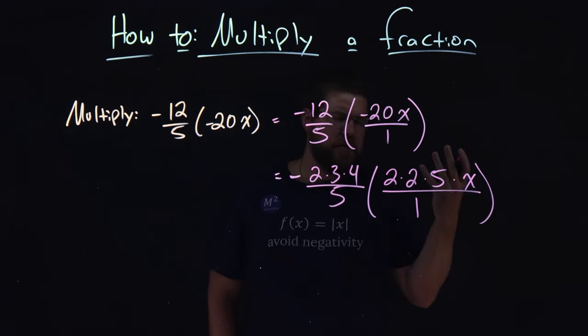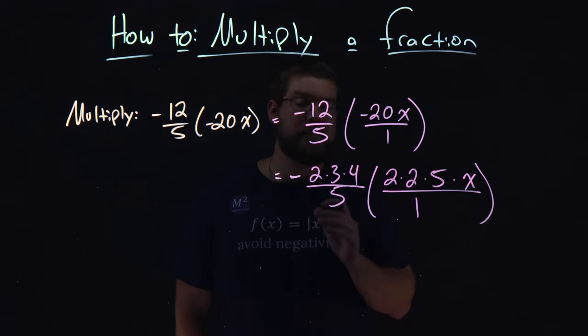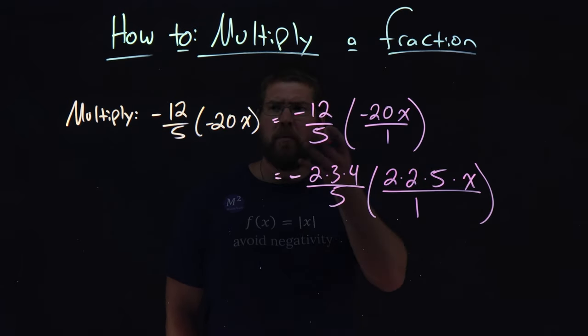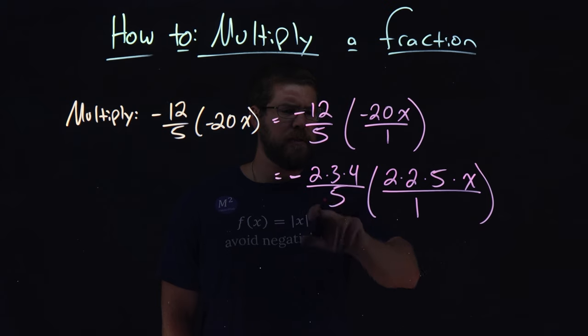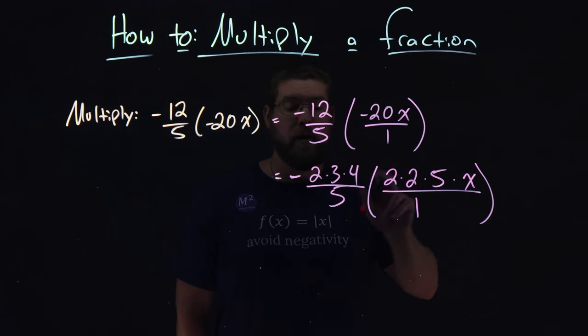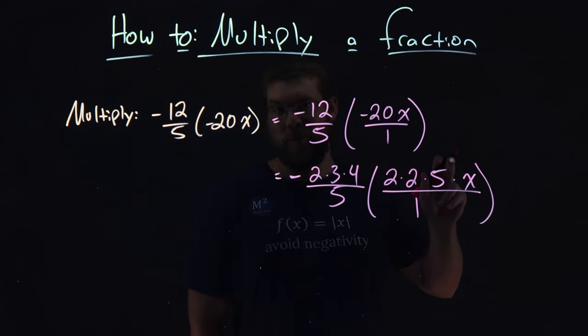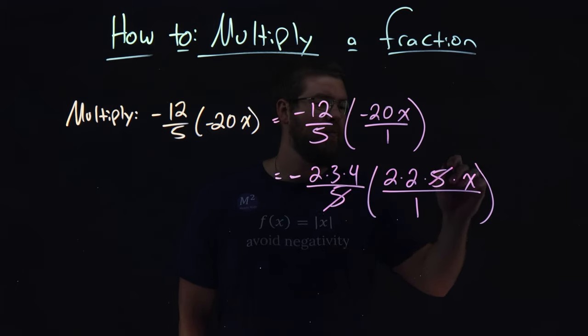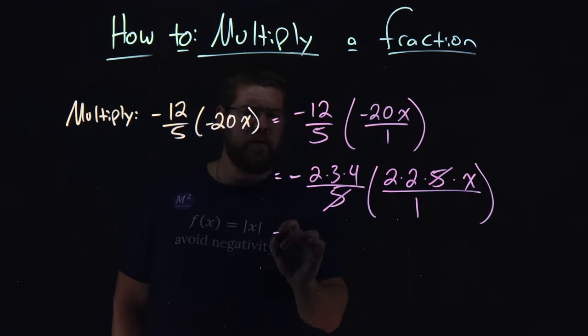Now, you're not going to do this prime factorization every single time, but it's good to see this broken down. When we multiply these fractions, we can simplify. There's a 5 here and a 5 in the denominator and 5 in the numerator. Cross them out, and what are we left with?